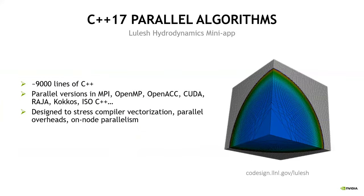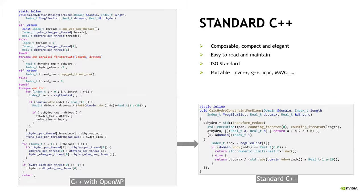To highlight some successes, first we'll look at a mini app called Lulesh, from Lawrence Livermore National Laboratory. It's a hydrodynamics mini app written in C++ with around 9,000 lines of code. Mini apps are designed to test a variety of approaches — they have versions for MPI, OpenMP, and other technologies. If I show you a snippet of the code, you can see using their baseline OpenMP, there are IFDEFs to support serial or parallel execution, a parallel pragma to spawn CPU threads, and OMP for to work-share the loop. This is a fairly typical OpenMP code with the addition of pragmas and IFDEFs, and this is the code they run in production.